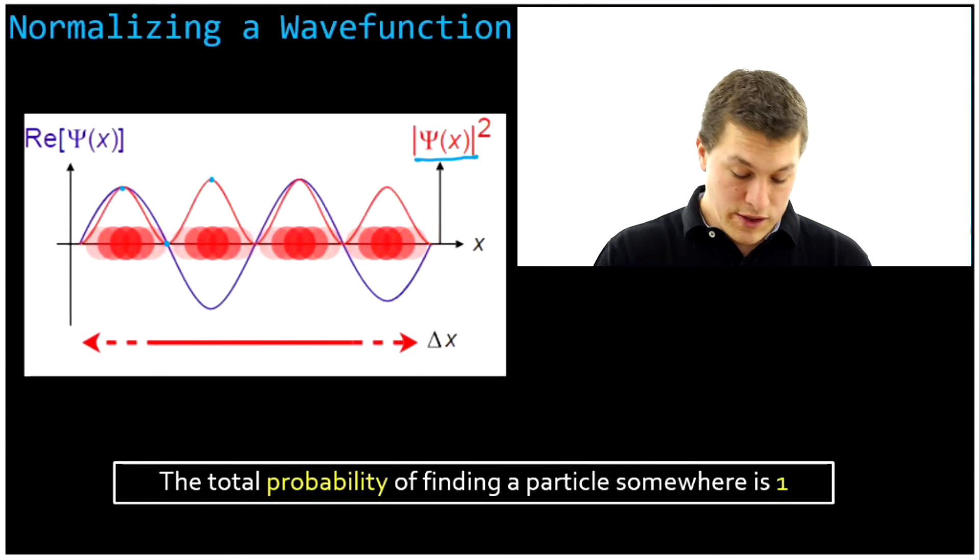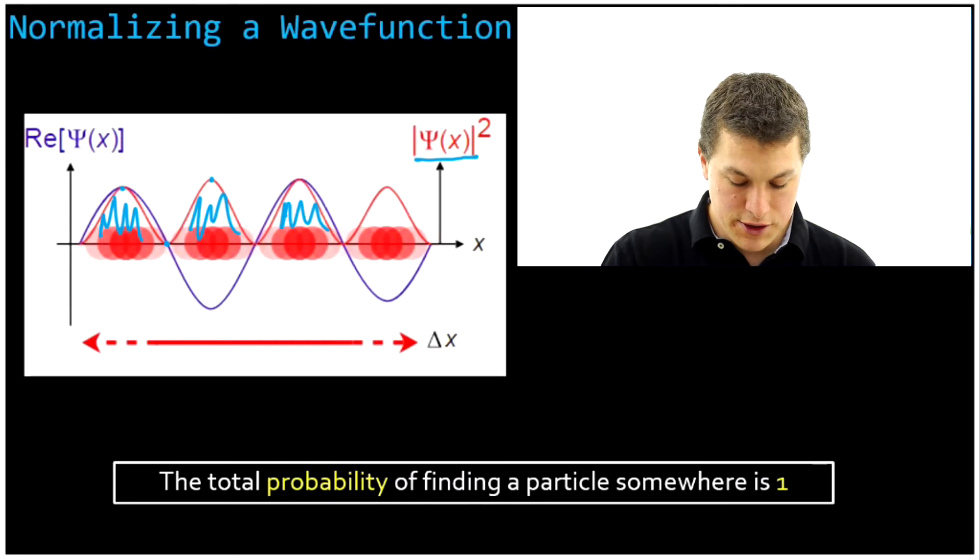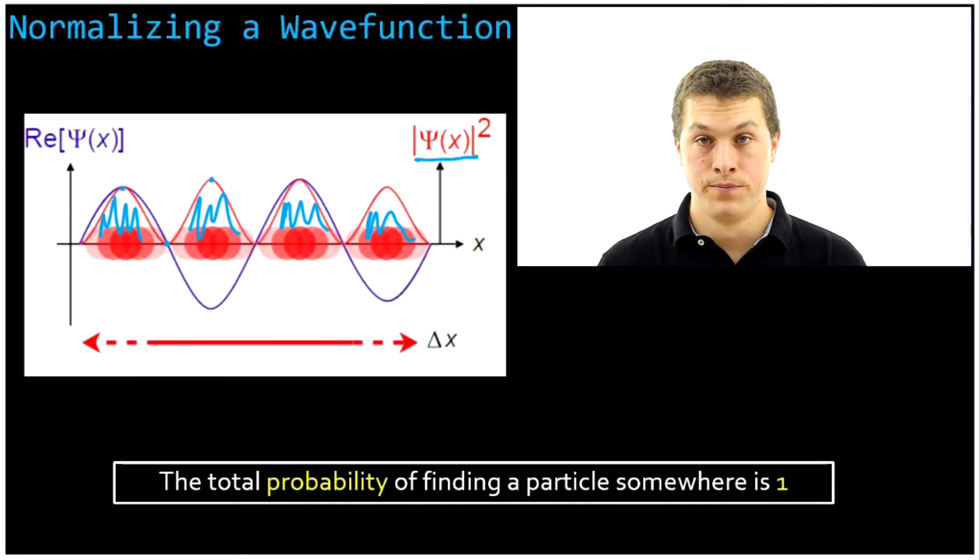And what we know is that if I add up the chances of finding it over all these regions where our wave function exists, that it has to add up to 1. Why is that? Well, what that's saying is if I add up the probability, my chances of finding it anywhere, it must be 100%, or 1.